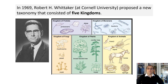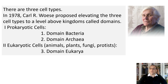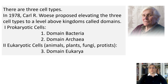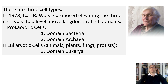But there are three different cell types on this planet. Therefore, in 1978, Carl Woese proposed elevating the three cell types to a level above kingdoms. He called this taxon domain. We now identify two prokaryotic domains — Bacteria and Archaea — and one eukaryotic domain, Eukarya. Domains are more general; kingdoms are more specific.